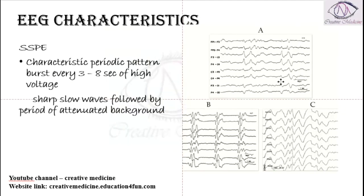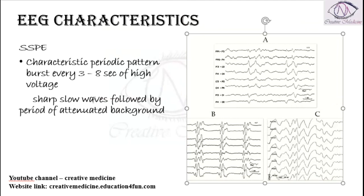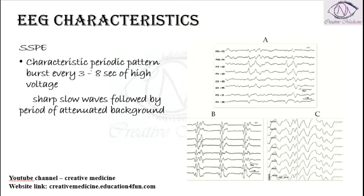First, we will see subacute sclerosing panencephalitis. In subacute sclerosing panencephalitis, there is a characteristic periodic pattern of bursts every 3 to 8 seconds of high voltage. These are periodic patterns of bursts every 3 to 8 seconds of high voltage bursts.